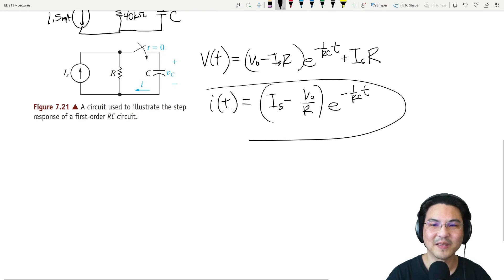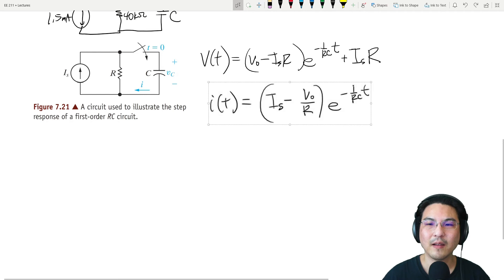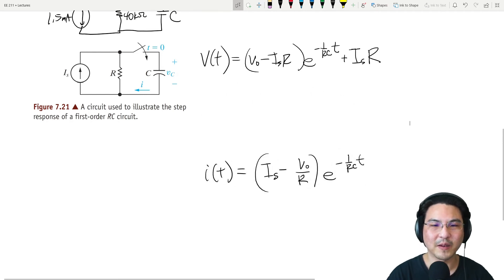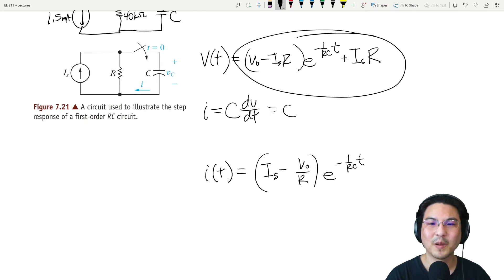This came from the displacement current for capacitor, which is i = C dV/dt. So it's C times the derivative of this, and that simplified to this.